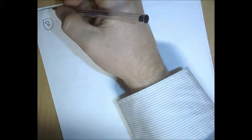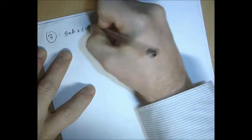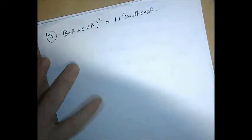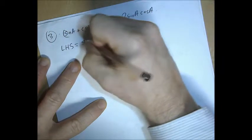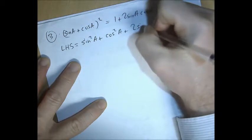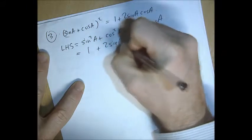Third question: I'm going to prove that (sin a + cos a)² = 1 + 2 sin a cos a. I'm going to turn the left-hand side into the right. I expand using the poem: square the first, square the last, twice the product of the first and last. Sin²a + cos²a equals 1, so that is equal to 1 + 2 sin a cos a. We're done.